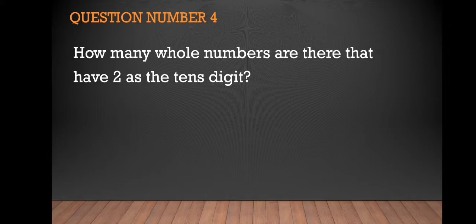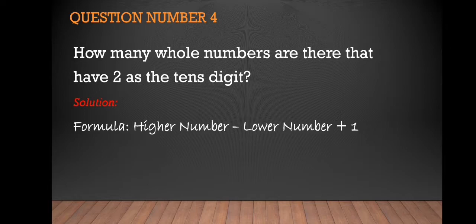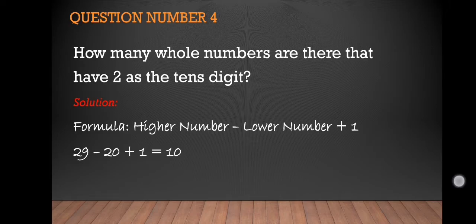So what we are going to do is simply use the formula: higher number minus the lower number plus 1. The higher number is 29 minus the lower number which is 20 plus 1. And 29 minus 20 is 9 plus 1 which equals 10.